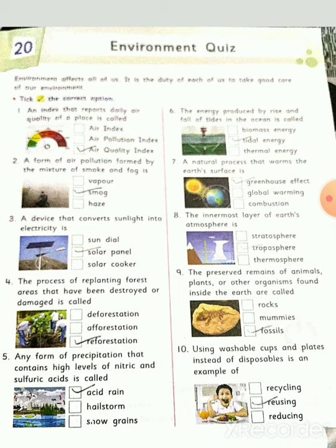Fifth: any form of precipitation that contains high levels of nitric and sulfuric acid is called acid rain. Sixth: the energy produced by the rise and fall of tides in the ocean is called tidal energy. Seventh: the natural process that warms the earth's surface is the greenhouse effect. Eighth: the innermost layer of the earth's atmosphere is the troposphere. Ninth: the preserved remains of animals, plants, or other organisms found inside the earth are called fossils.